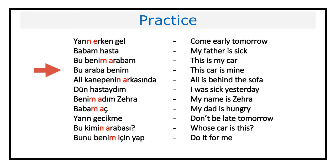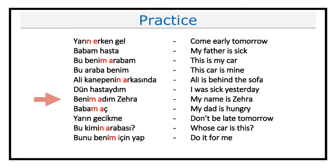In the fifth sentence, we have a connection case between 'kanepenin' and 'arkasında'. Ali kanepenin arkasında. In the sixth sentence, we again don't have any connection case. Dün hastaydım. In the seventh sentence, we have again the connection between 'benim' and 'adım'. Benim adım Zehra. In the eighth sentence, we have connection between 'babam' and 'aç'. Babam aç.